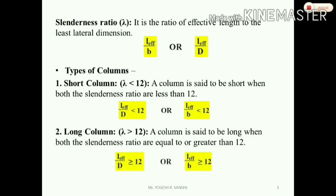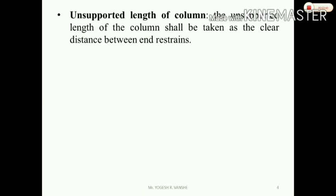If both slenderness ratios are less than 12, we classify it as a short column. If the slenderness ratio is equal to or greater than 12, we classify it as a long column. The unsupported length of a column shall be taken as the clear distance between supports and restraints — clear distance versus effective distance.